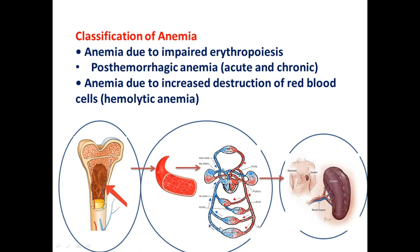After formation in bone marrow, our erythrocytes enter systemic circulation and perform their main function of gas exchange. They circulate in peripheral blood for 100 to 120 days — about 3 months — and are then destroyed in the reticuloendothelial system. If we have any bleeding, rupturing of vessels, or severe trauma resulting in acute or chronic bleeding, we call this post-hemorrhagic anemia.